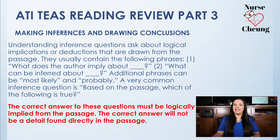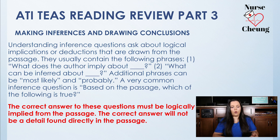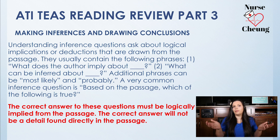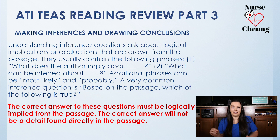To begin part three of the reading portion of the ATI TEAS, we're going to start by discussing making inferences as well as drawing conclusions. Inference questions ask about logical implications and deductions that can be drawn directly from the passage. They usually contain phrases such as 'what does the author imply about blank?' or 'what can be inferred about blank?' Additional phrases you might see are 'most likely,' 'potentially,' or 'probably.' A very common inference question is 'based on the passage, which of the following is true?' The correct answers are usually logically implied — meaning you won't find the answer stated directly in the passage.